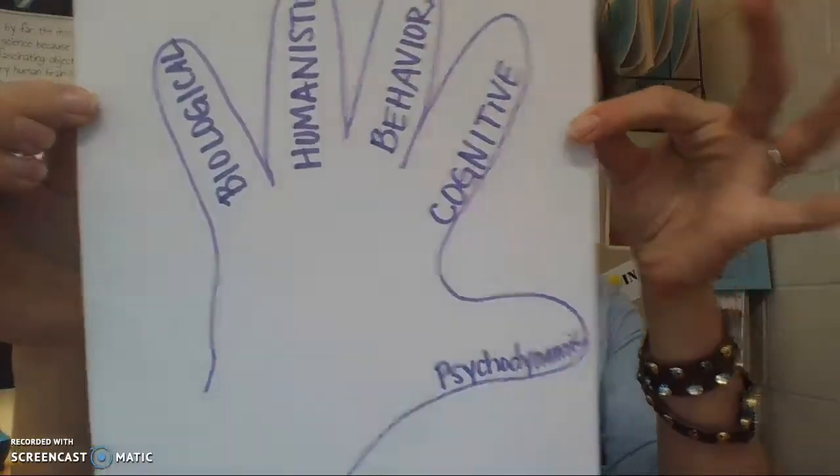The last finger is your pinky — write biological on your pinky finger. The reason is that your brainstem is about as big as your pinky finger. That'll help you think of biological, because a biological psychologist is focused on the brain and how brain chemistry makes you who you are. A biological psychologist is going to look at the way you behave and think, and explain it through your brain chemistry.